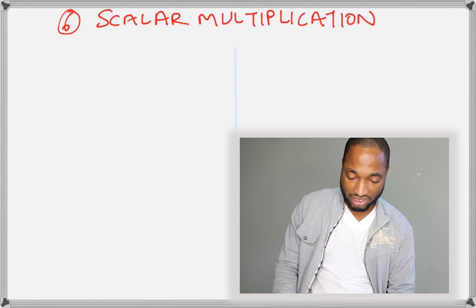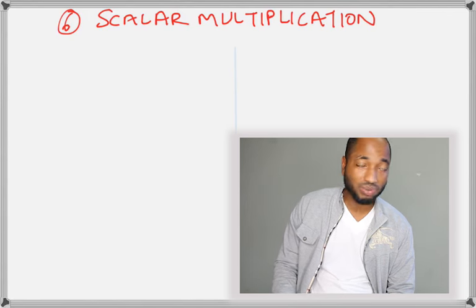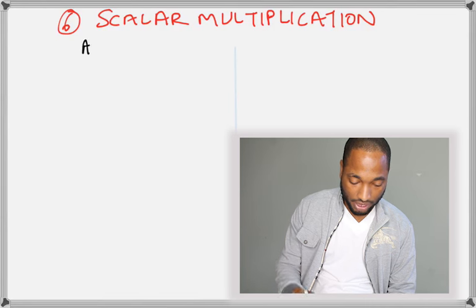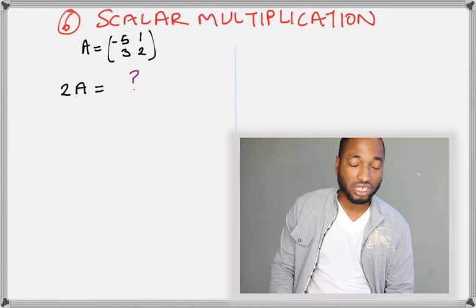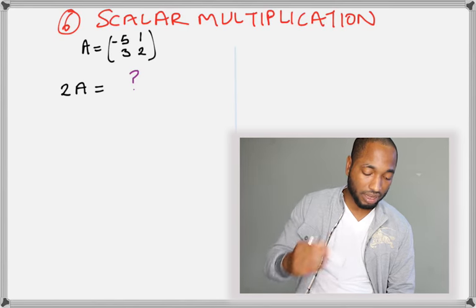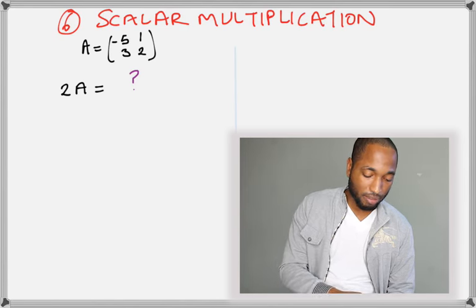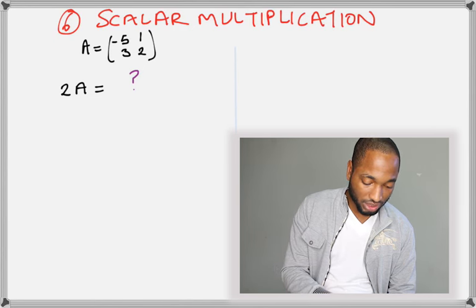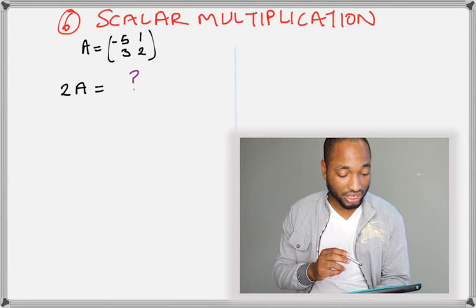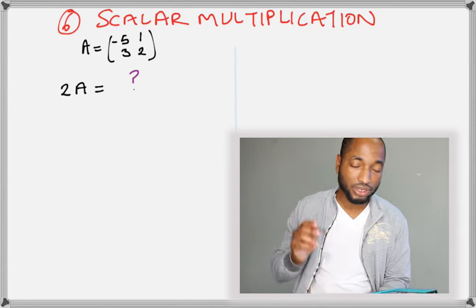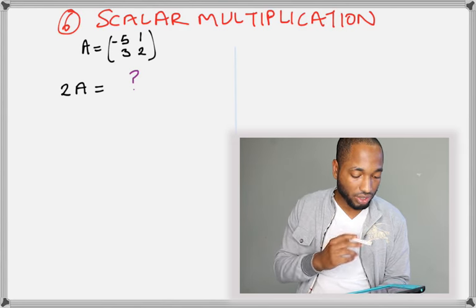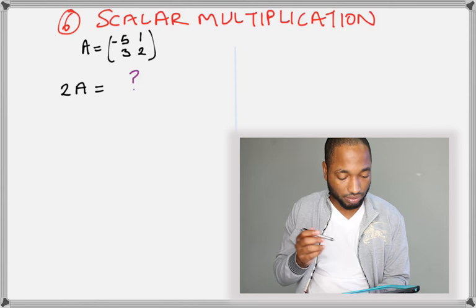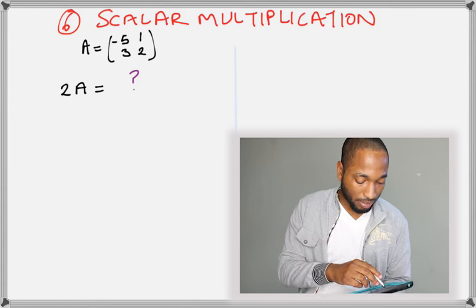Scalar multiplication, this is the final part of the basics here, so we're near the end, people. So, scalar multiplication is when we multiply a matrix by a number, a constant outside of the matrix. And this number, it just applies to everything. So, this 2 is going to multiply. We have a here, and as you can see, we can actually name matrix after a capital letter. So, this matrix a is equal to (negative 5, 1, 3, 2).